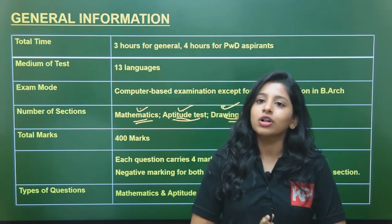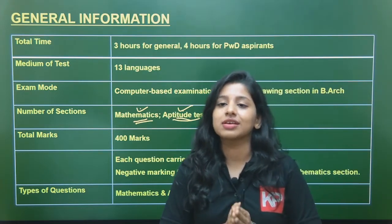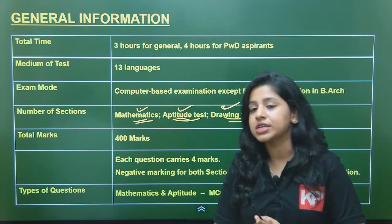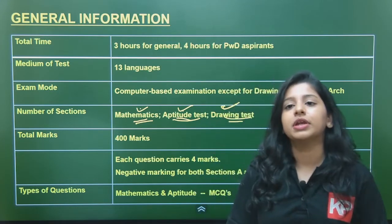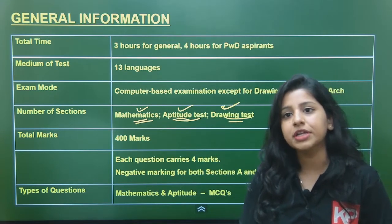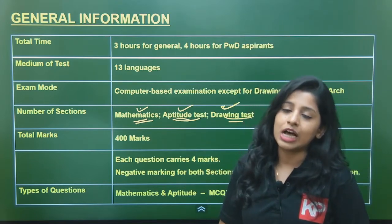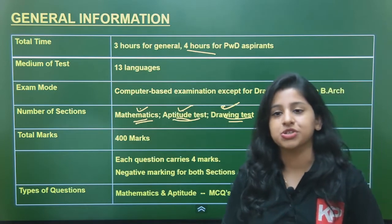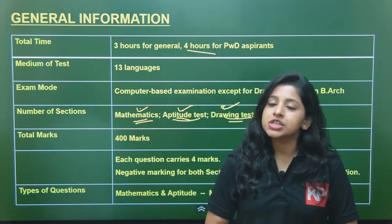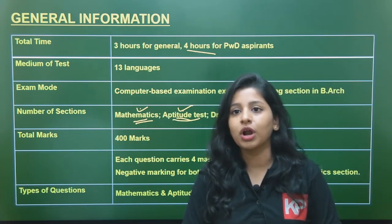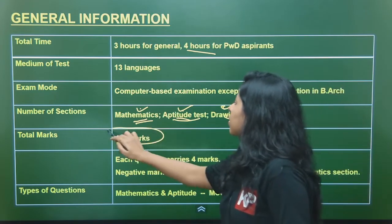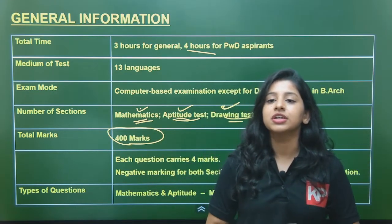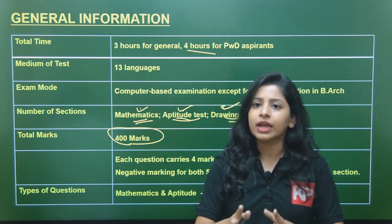The overall time for this examination is three hours for general candidates, but if you are a differently-abled aspirant you get four hours — one extra hour. The total marks for this examination is 400, and it is conducted in 13 different languages.